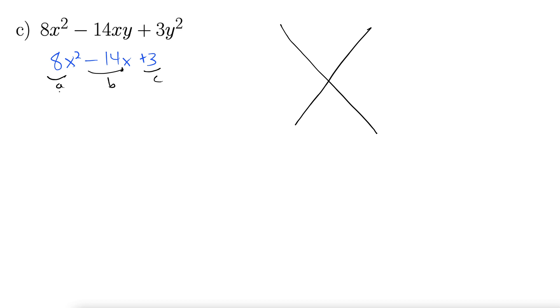So A times C is 24. AC goes here. And then B goes down here, negative 14. AX and AX go on the sides. So that would be 8x dividing line, 8x dividing line. Now we need factors of AC that add up to B. So factors of 24 that add to negative 14.